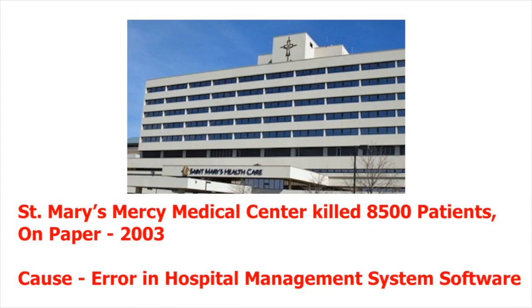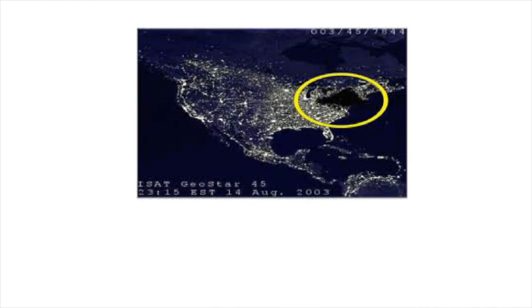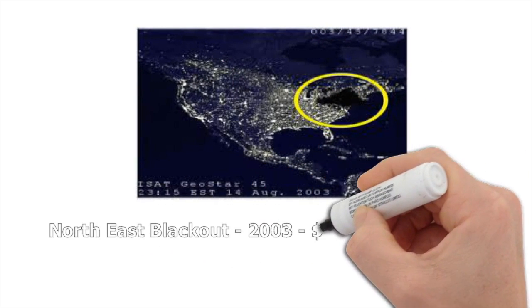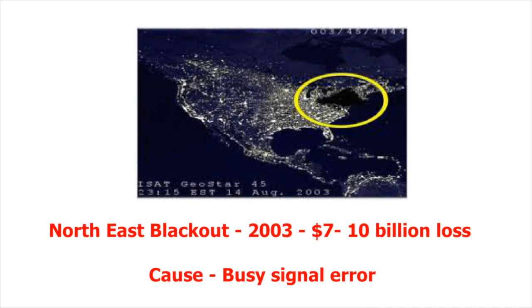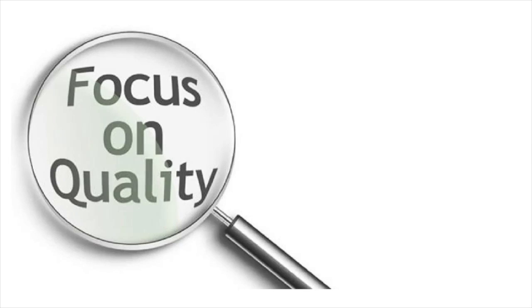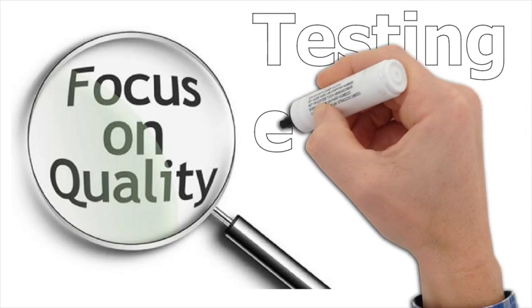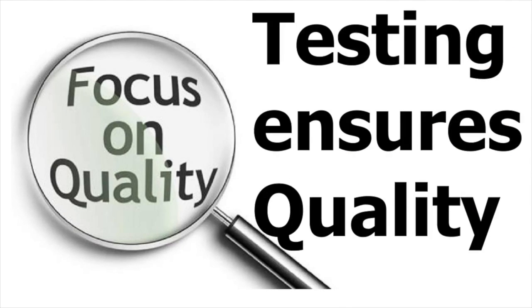The next example is St. Mary's Mercy Medical Center, where an error in the hospital management system software killed 8,500 patients on paper. The third example is the Northeast Blackout of 2003, causing 7 to 10 billion dollars in losses — the reason being a busy signal error.